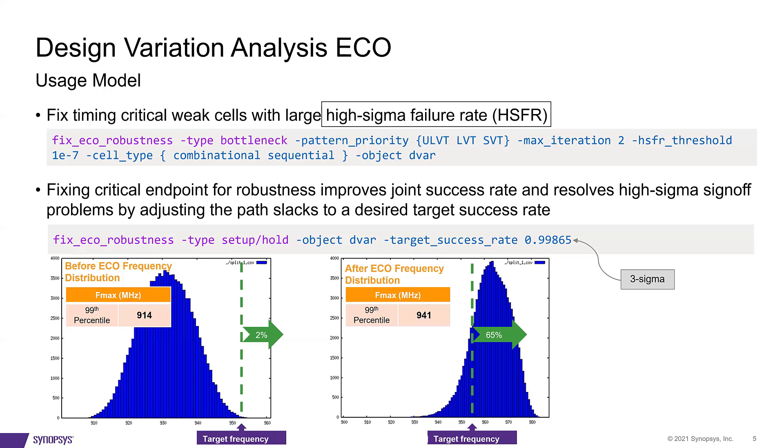And we can notice that it moves from 914 MHz to 941 MHz without any penalty in power or area. And it also improved the joint success rate from 2% to 65%, which means 65% of our virtual chips have met the target frequency spec.